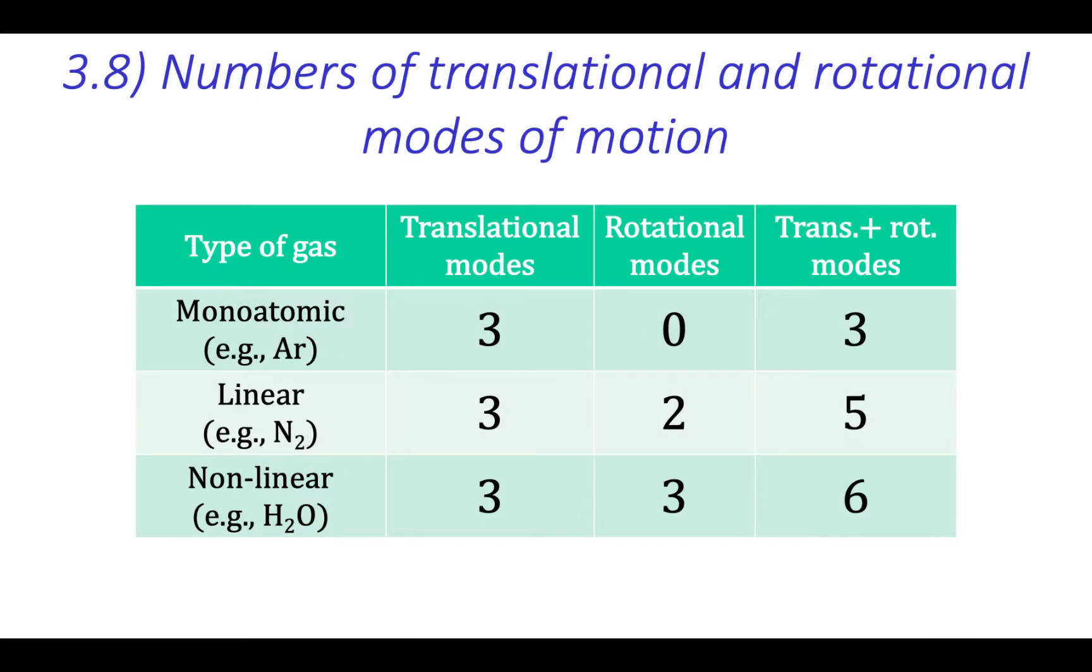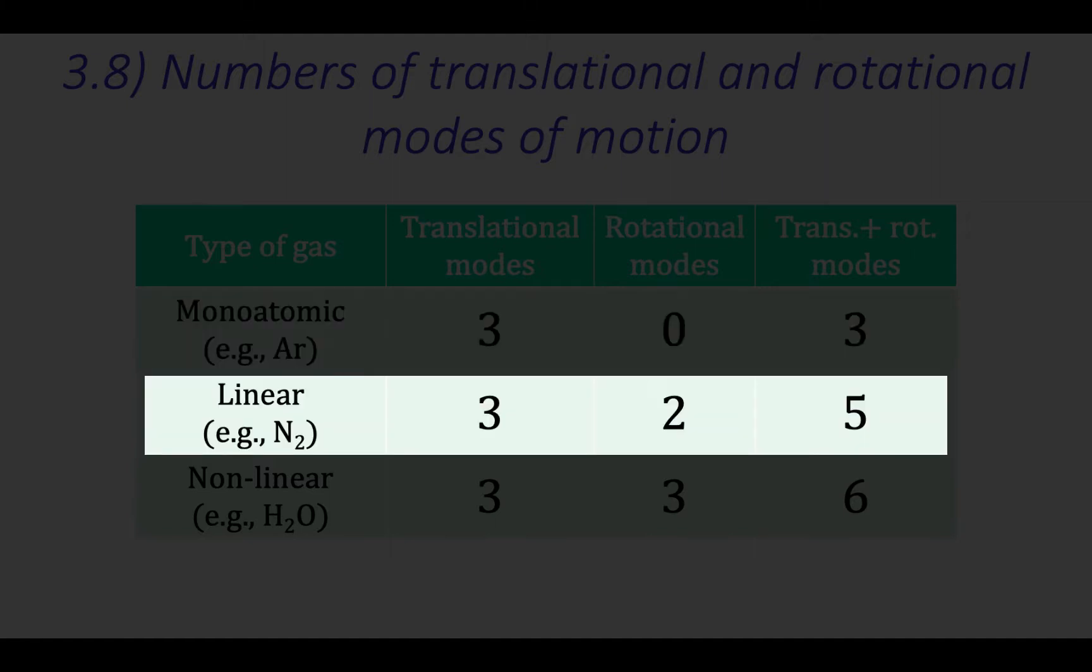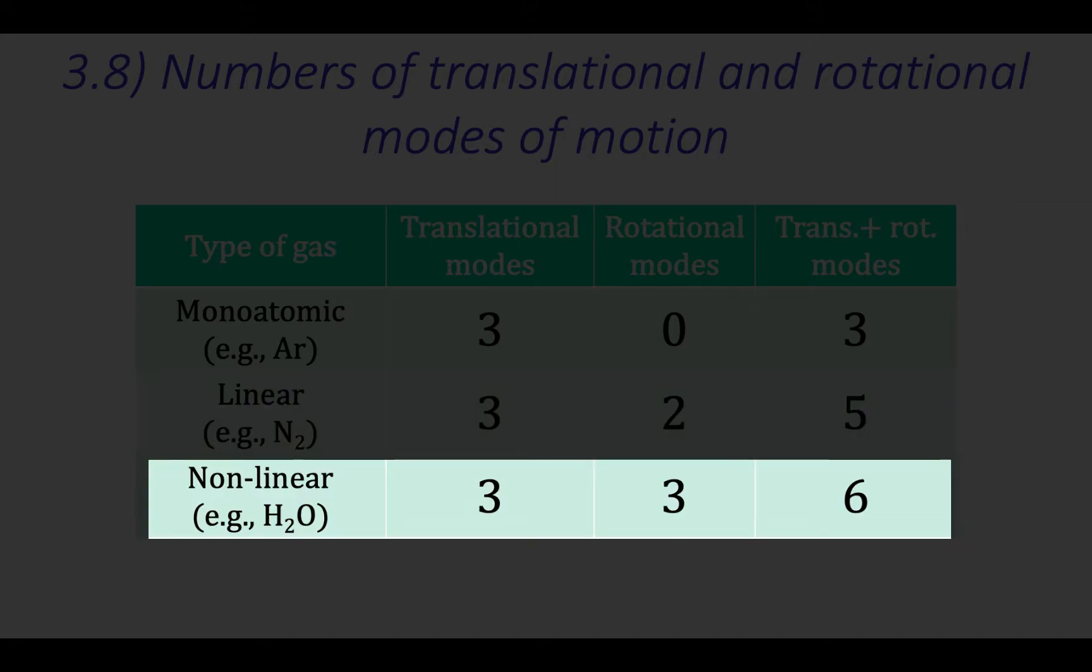This table summarizes the total number of translational and rotational modes of motion available to different types of gases for storing energy. For monoatomic gases, there are three such modes. For linear gases, there are five such modes. And for nonlinear gases, there are six such modes.